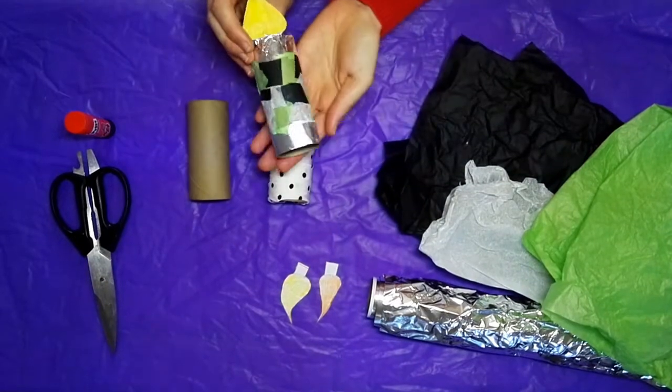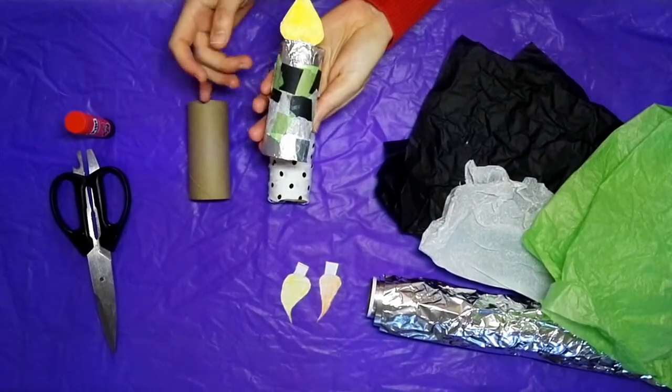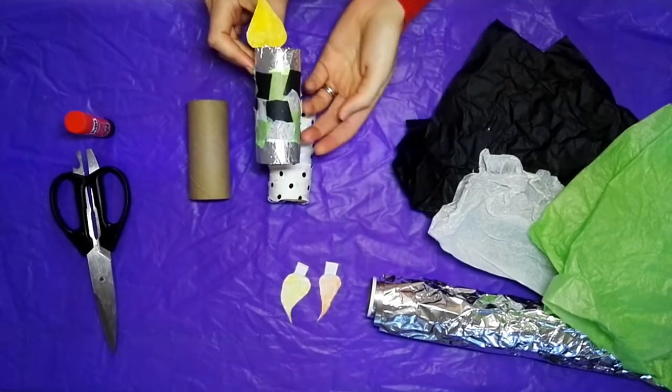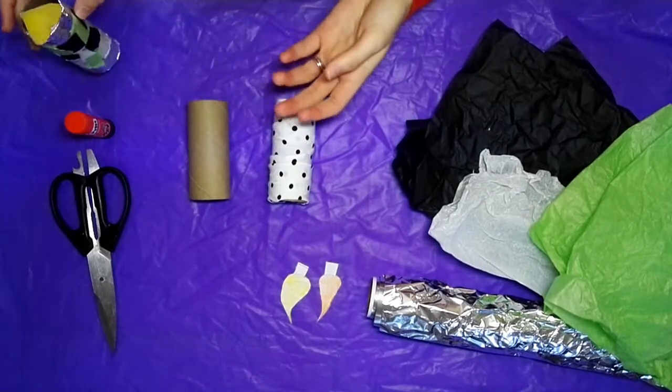So this is one I've already decorated. I've used strips of tin foil for the bottom and for the top here and then squares of tissue paper for the rest of it, and of course I've got my little flame on top. So let's put this to one side.